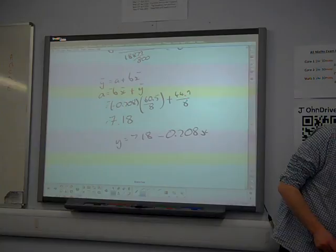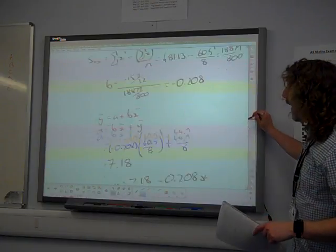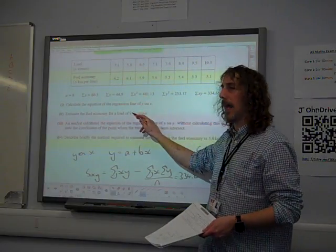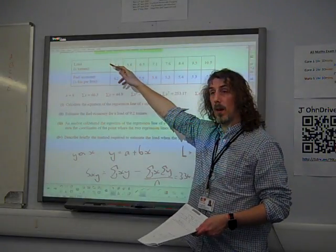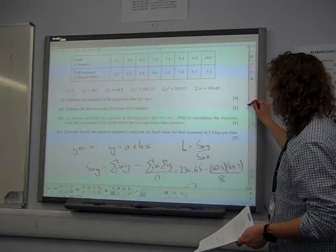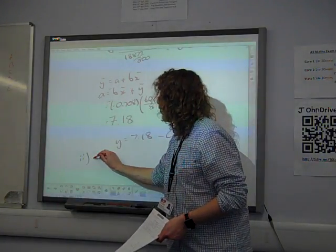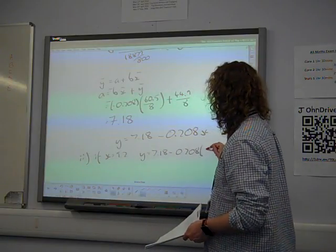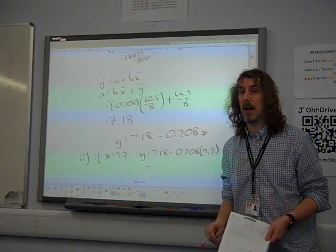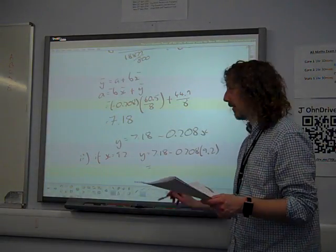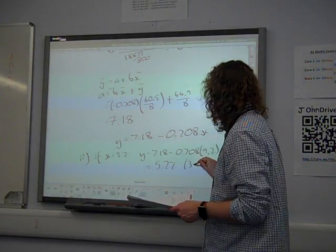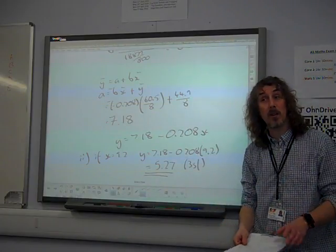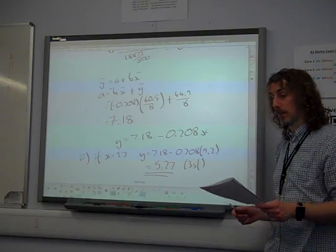Not many marks, only four marks. Then it says, what happens if the load is 9.2 tonnes? Now, is that x or y? That is the x value. The load is the x value. So that's just subbing x into our formula. So part two, if x is 9.2, y is 7.18 minus 0.208 times 9.2. You've got complete error carrying forward marks here. So if you did a calculation that involved subbing the right number in the right place into a formula with the wrong values in it, you've still got the marks, or you should have done.